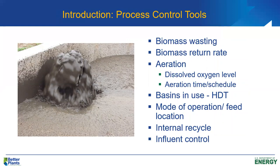In terms of process control tools, our primary tools are the biomass wasting rate (WAS) and the biomass return rate (RAS). Aeration is another key tool — how much aeration we're providing in the basin. The aeration system usually accounts for about 50% to 60% of our overall energy use, so we want to use it wisely to minimize operating and energy costs. There are times when we want to turn off our aerators for a few hours, which typically saves energy and also allows us to denitrify under certain conditions. We also need to know the hydraulic detention time (HDT) of our basins, which requires knowing the volumes of all our tanks.